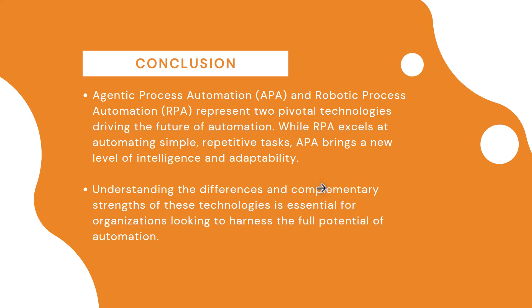Let's conclude. APA — Agentic Process Automation — and RPA represent two pivotal technologies driving the future of automation. While RPA excels at automating simple and repetitive tasks, APA brings a new level of intelligence and adaptability — specifically the power of decision making. Understanding the difference and complementary strengths of these two technologies is essential for organizations looking to grow, build solutions, and utilize the full potential of automation.